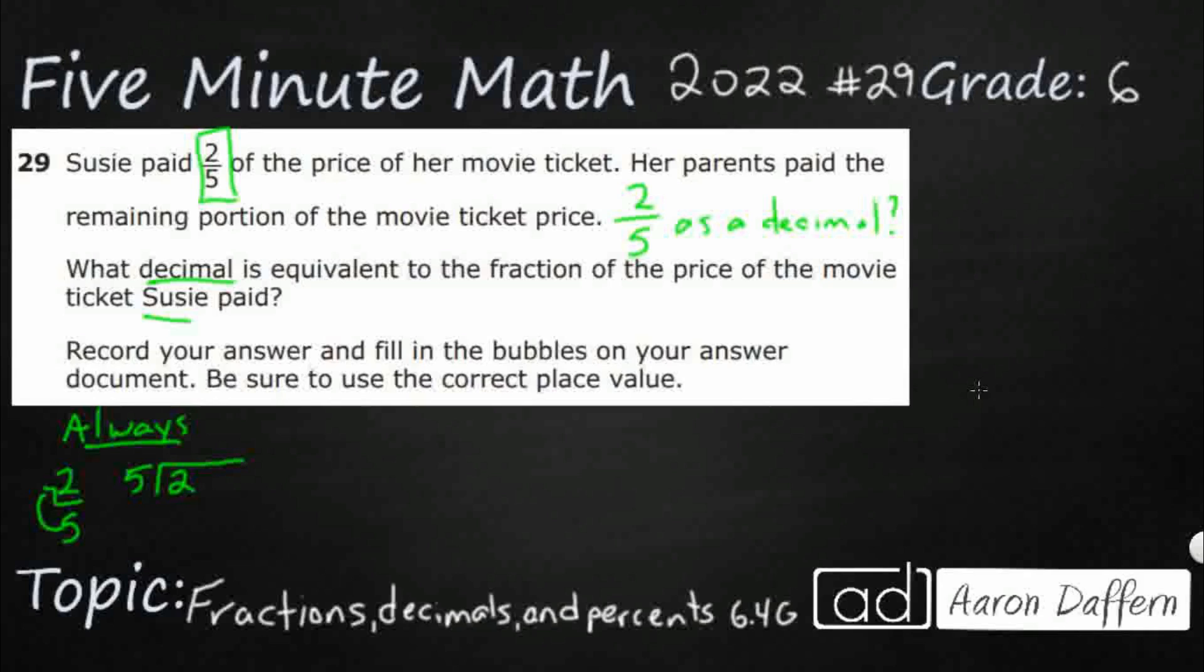So five goes into two. It doesn't. So we need to make sure we're using the algorithm correctly. We need to put a decimal within the dividend, decimal up on the quotient bar. Now we can add as many zeros as we want to until we get to where we need to. Five goes into 20 four times. That's as far as we need to go. So that's going to be 20. So there we go. Two fifths is equal to four tenths.